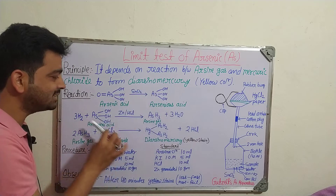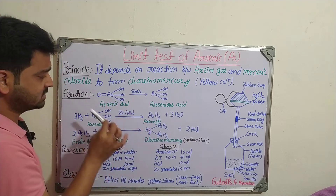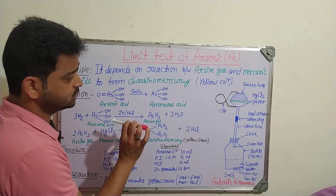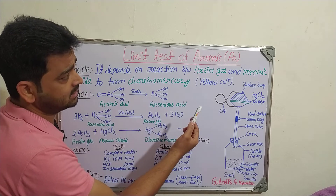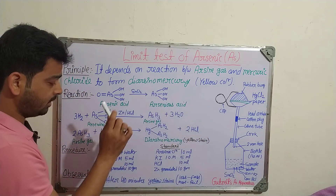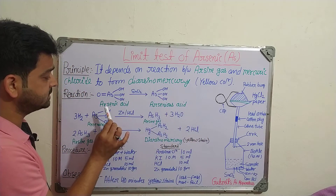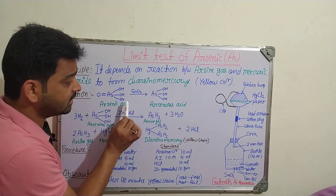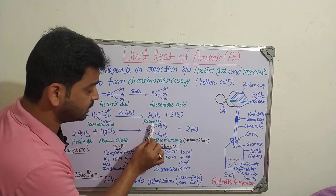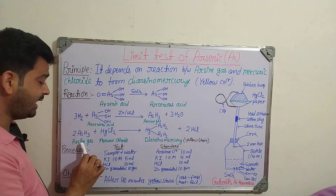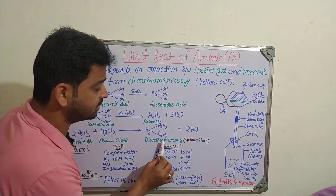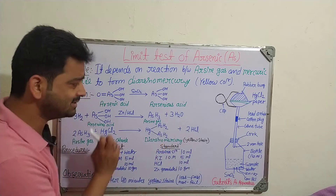So let us try to understand what reaction is involved here. It is basically a three-step process. Arsenic will be there in the trivalent form or the pentavalent form. In short, arsenic acid will convert into arsenic acid, then arsenic acid will convert into arsine gas. Arsine gas, when it reacts with mercury chloride, will form diarseno-mercury, which will be the yellow stain — that is the theme.